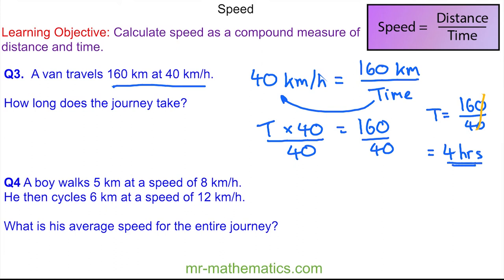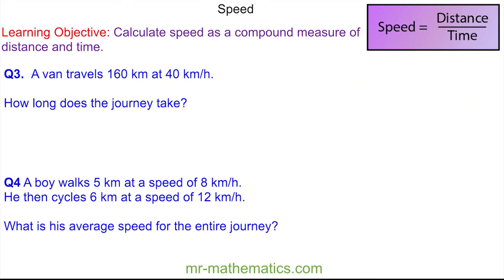For question four I'm going to draw a diagram, and I'm going to put the diagram up into two parts. In the first part of the journey, a boy walks for five kilometers at a speed of eight kilometers per hour. So I have the distance, I have the speed, I do not have the time.